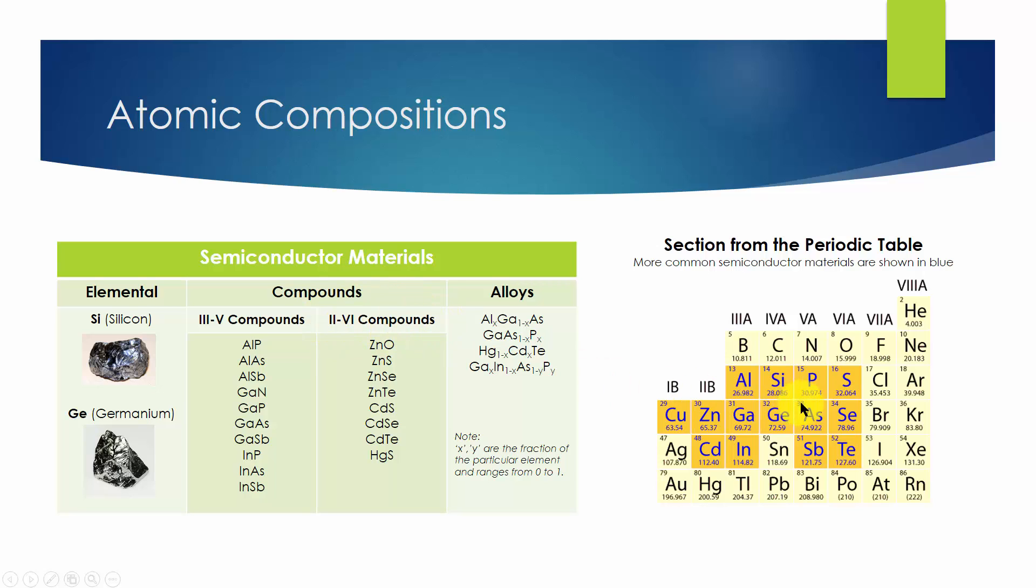Notice that these combinations are of elements an equal distance to either side of column 4. The column 3 element gallium plus the column 5 element arsenic yields the 3-5 compound semiconductor gallium arsenide.